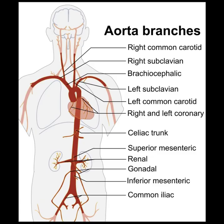The aorta is the main artery that leaves the heart and distributes oxygenated blood to the rest of the body. It gives rise to many arteries that are visible by ultrasound. The abdominal aorta begins after the aorta passes through the diaphragm. General sonographers can use ultrasound to evaluate the shape, size, and blood flow through the aorta.